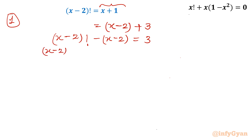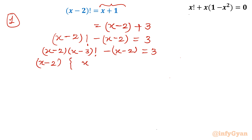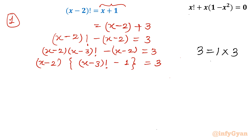Now I take (x minus 2) outside as a common factor. Once I take (x minus 2) outside, it gives us: (x minus 2) times [(x minus 3) factorial minus 1] equal to 3. You can see it is the product of (x minus 2) and the curly bracket, and that product is 3. Because x is a whole number, the LHS must be a positive integer. So we look at the prime factorization of 3: we can write 1 times 3 or 3 times 1. So either (x minus 2) is 1 and the bracket is 3, or (x minus 2) is 3 and the bracket is 1.